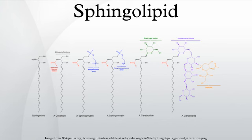The sphingosine backbone is O-linked to a charged head group such as ethanolamine, serine, or choline. The backbone is also amide-linked to an acyl group, such as a fatty acid.